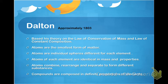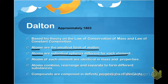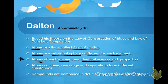Later on, other models and scientists would come to discover that there are actually particles within atoms, but Dalton did not know that. So atoms are the smallest form of matter. Atoms are individual spheres, different for each element, which is still true — each element has an atom that is unique and different from others. Atoms of each element are identical in mass and properties, which we will see did not actually hold true.